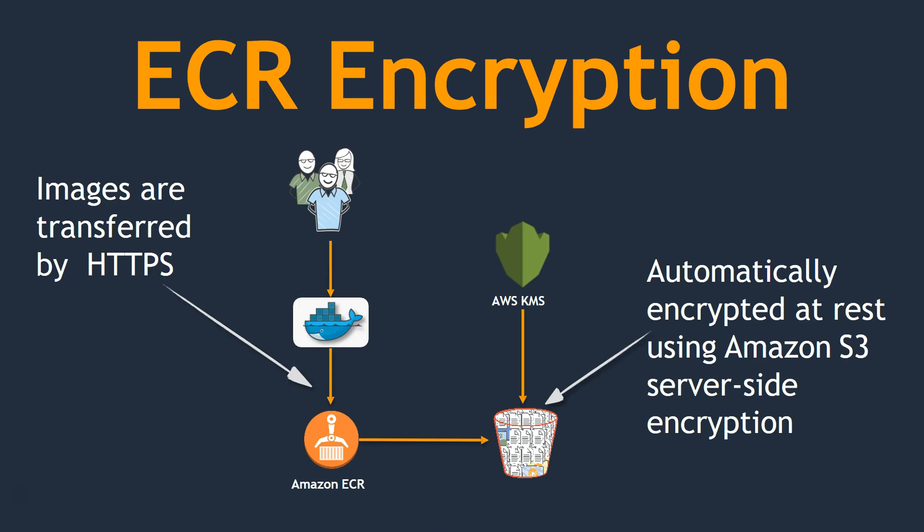You should also know that ECR natively supports encryption. When a developer pushes a Docker image into ECR, the entire traffic is encrypted through HTTPS. There is an S3 bucket shown here — the reason is that ECR stores all your images in an S3 bucket, and natively these images are encrypted using your KMS keys. Once you create your first repository and start pushing your image, you can go to your KMS dashboard and see the Amazon ECR master key that has been created. All your images are natively encrypted and stored there.